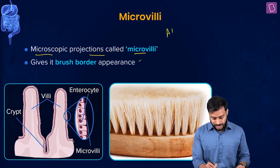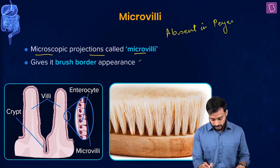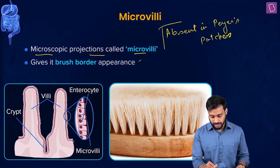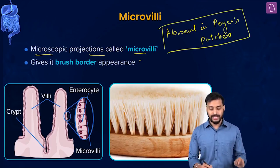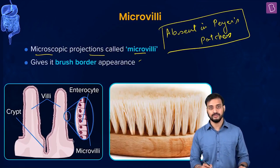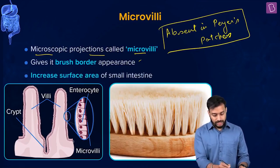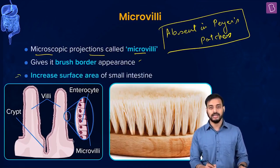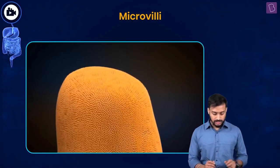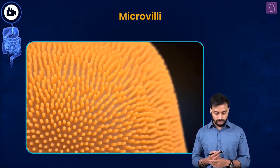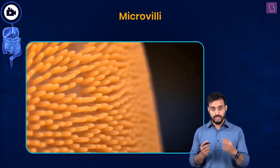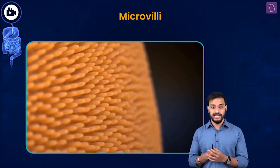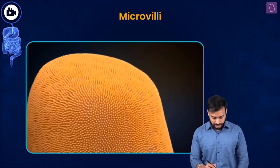Notably, microvilli are absent in Peyer's patches. Overall, villi and microvilli together increase the absorptive surface area of the small intestine. The finger-like villi have tiny hair-like microvilli projections on them.